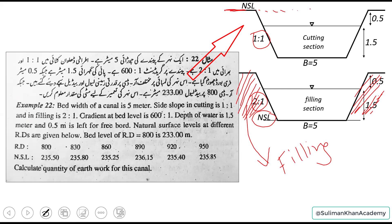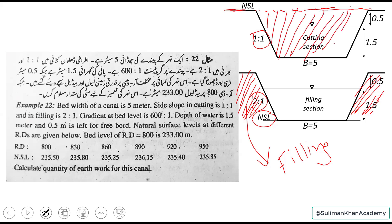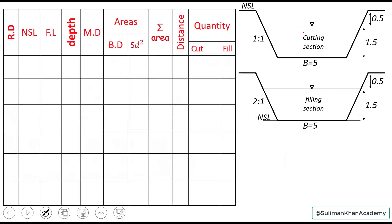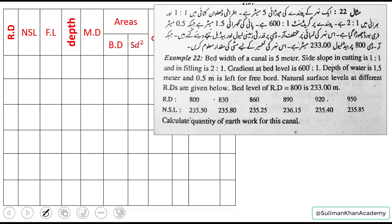This other section is in cutting because the NSL is above the channel bed — we have dug or excavated this section. Now let's find the solution using a table based on the mean depth method. You can also use the mean area method — either works. The RDs at different stations are known, and the interval is 30 meters.